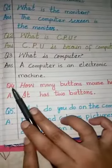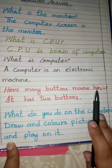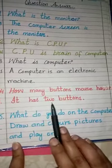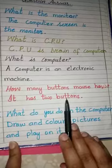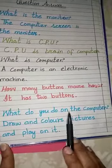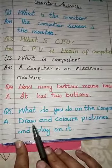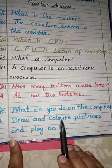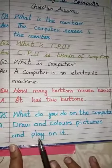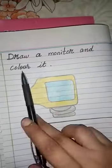Question number four: How many buttons does a mouse have? It has two buttons. Question number five: What do you do on the computer? Answer: Draw and color pictures and play on it. Now draw a monitor and color it in your notebook.